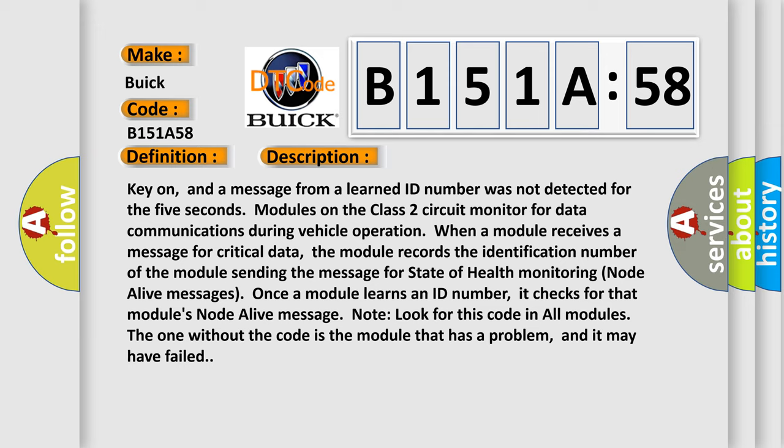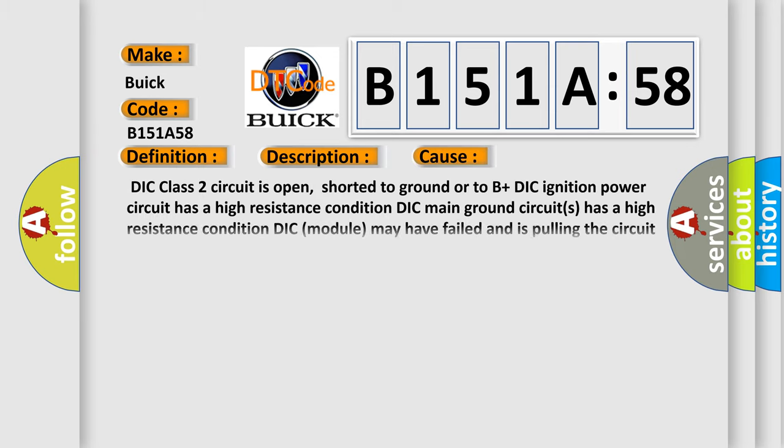Once a module learns an ID number, it checks for that module's node alive message. Look for this code in all modules. The one without the code is the module that has a problem, and it may have failed. This diagnostic error occurs most often in these cases.